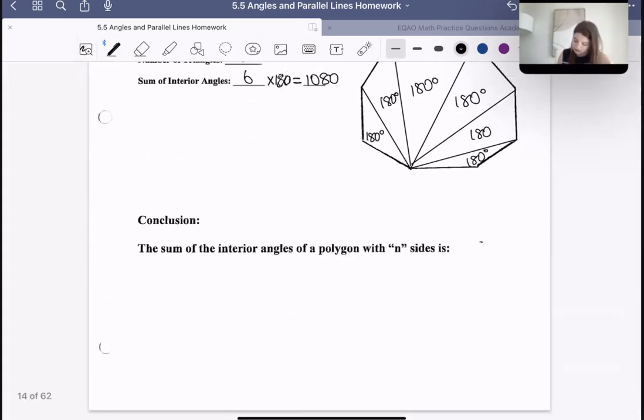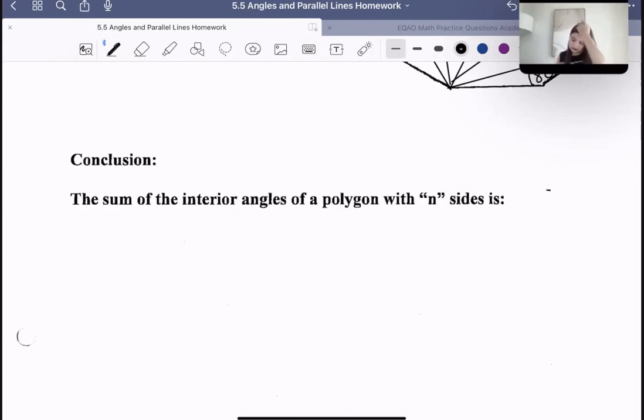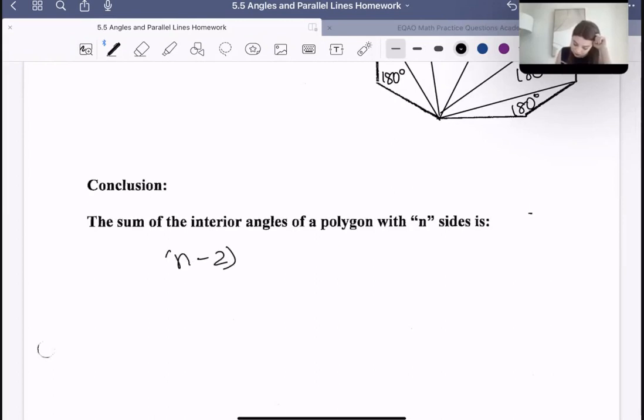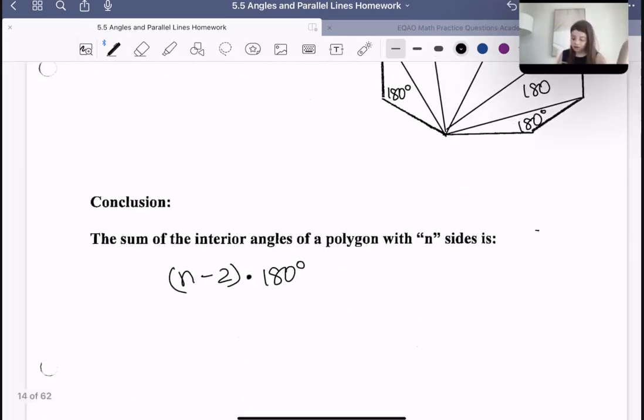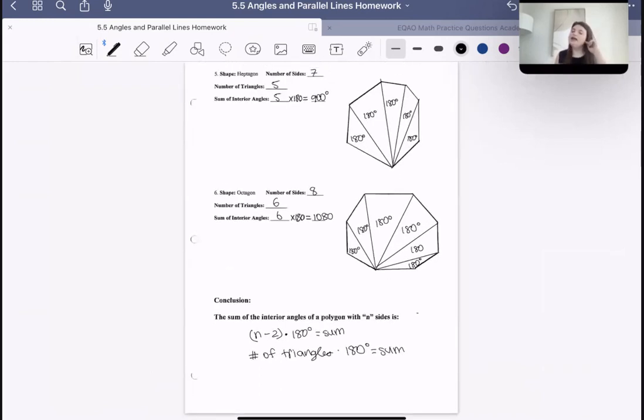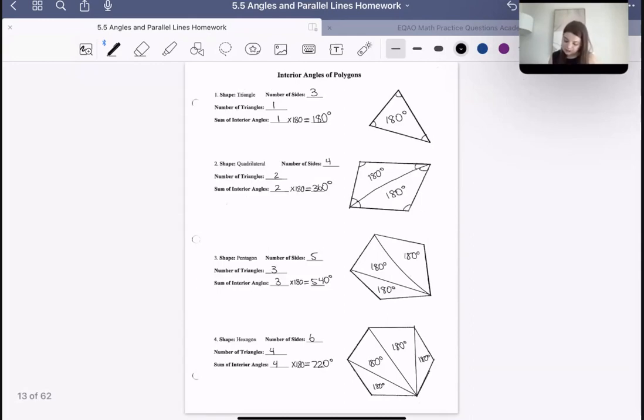All right. So what's the conclusion? The sum of the interior angles of the polygon with n sides is what? Well, we already know this. It's going to be n minus 2 times 180 degrees. Or in other words, the number of triangles times 180, based on the pretense that 180 is the number of degrees in one triangle. So if there's 2, it would be 2 times 180. If there's 3, it would be 3 times 180. And so on and so forth.